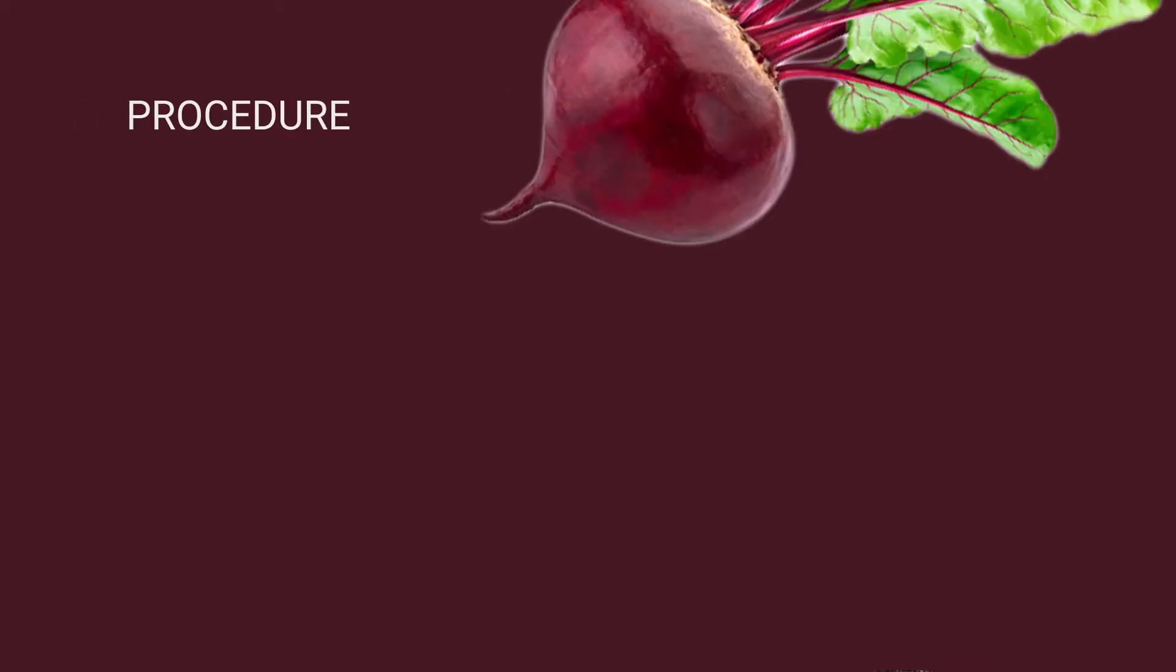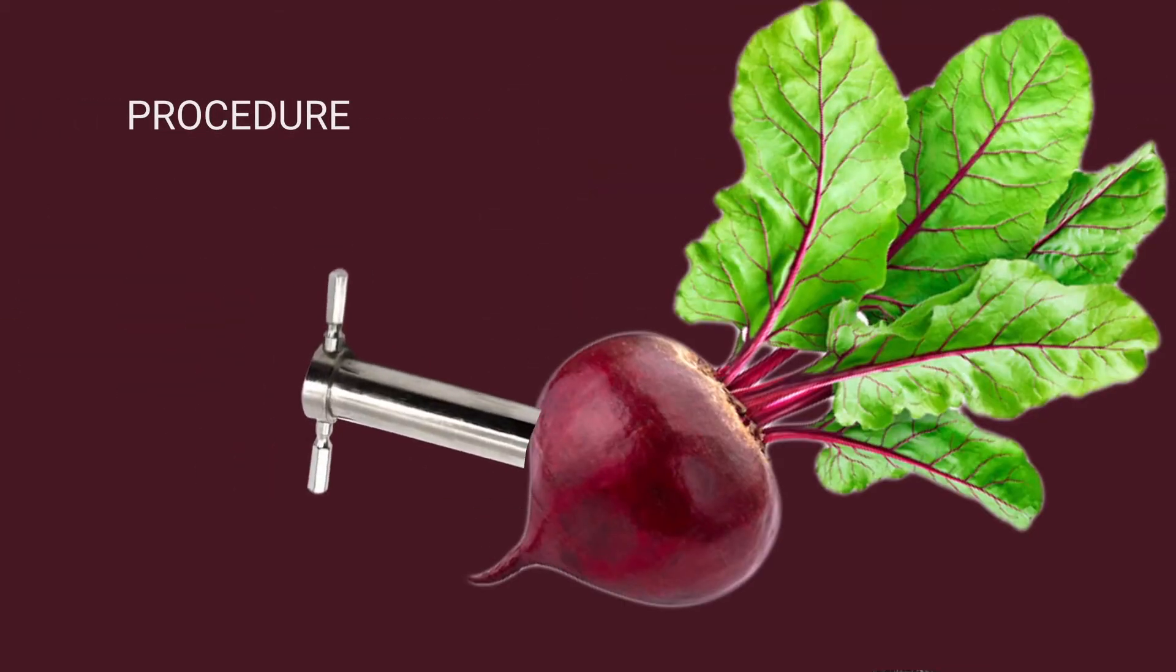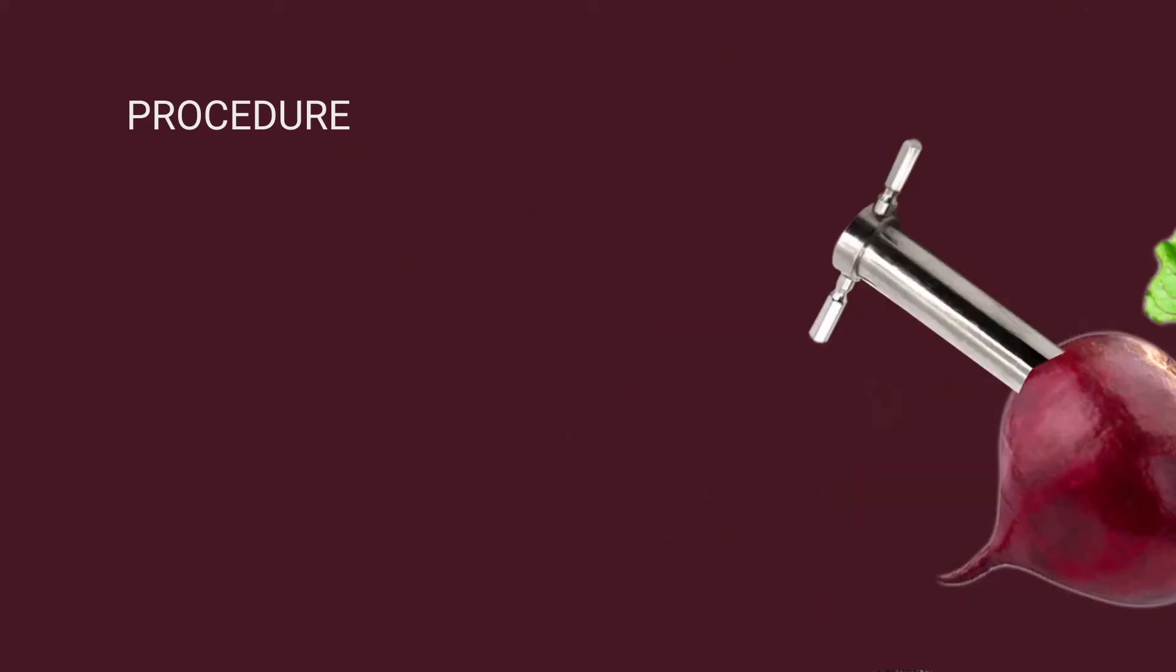Procedure: Small equal-sized pieces of beetroot tissue are cut with the help of a cork pourer and thoroughly washed with distilled water.